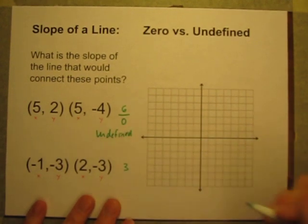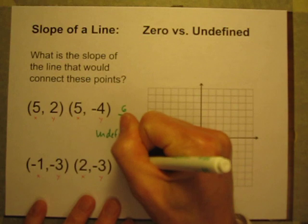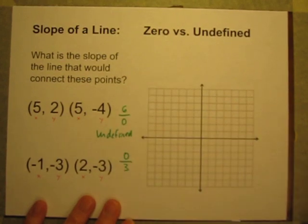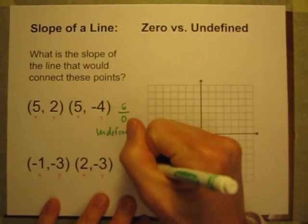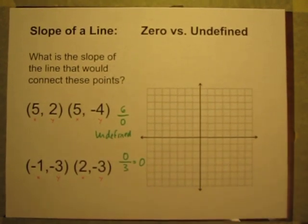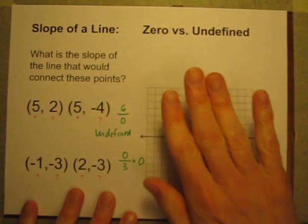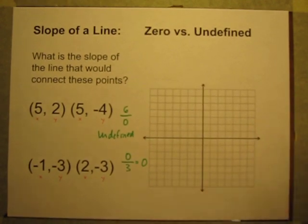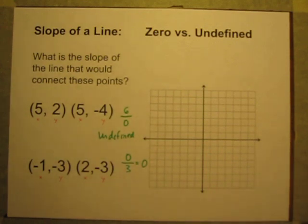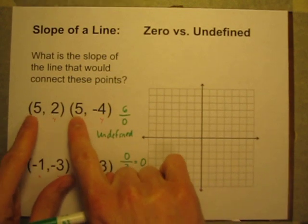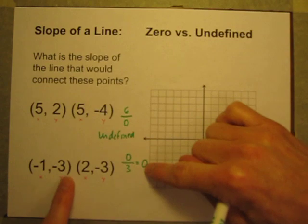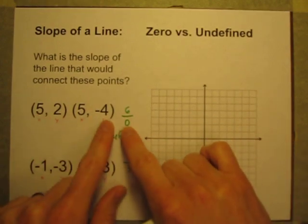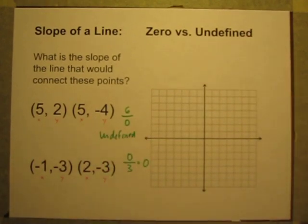That one is going to be a rise of 0 if these two points are horizontal. And a run of 3. And 0 divided by 3 is just 0. So visualizing them on a graph, or even drawing them on an actual graph would work too. But that's one way you can try to picture this. Look at the change in the y and the change in the x. And if the rise is 0, the slope is going to be 0. If the run is 0, you've got a vertical line that's going to be undefined.